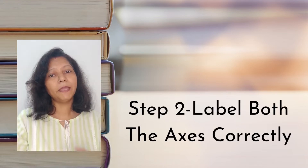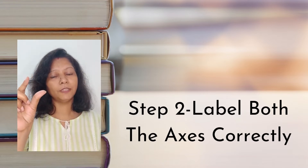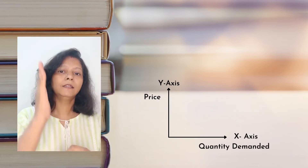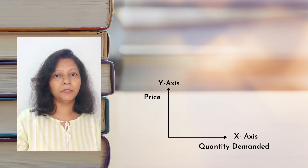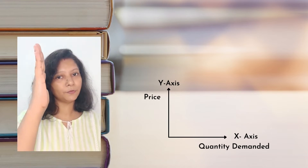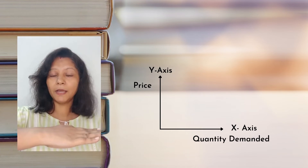The second important thing is that many times people interchange the labels for the axes — the X axis and the Y axis. When we draw the diagram for the law of demand, the Y axis would measure price and the X axis would measure quantity demanded. If we get these two axes correctly, plotting the diagram becomes very easy and it will never go wrong.